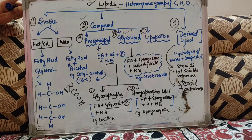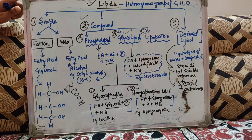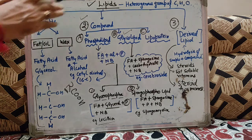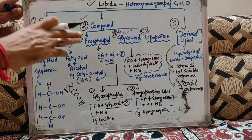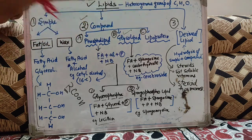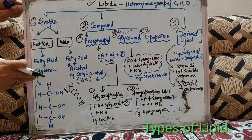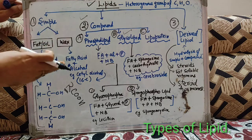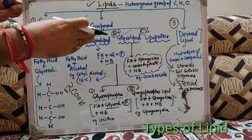So this is all about the type of lipids — एक बार फिर से हम इसको revise कर लेते हैं. Lipids जो हैं they are the heterogeneous group of carbon, hydrogen and little oxygen, और you can say these are the diverse group of hydrophobic molecules. ये तीन types के होते हैं: simple, compound, derived. Simple lipids में fat, oil and wax आ जाएगा. Compound lipids में phospholipids, glycolipids, lipoproteins आ जाएंगे.